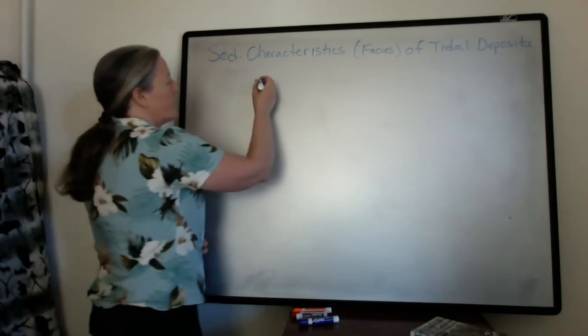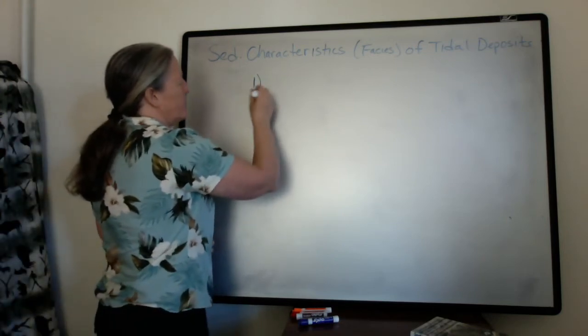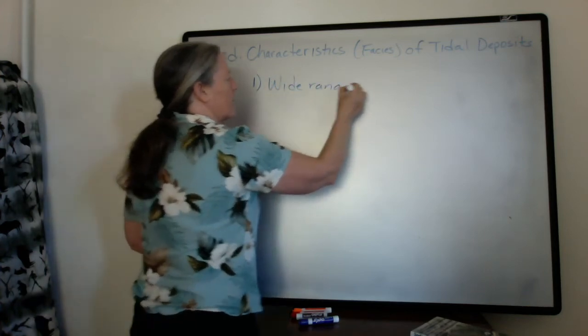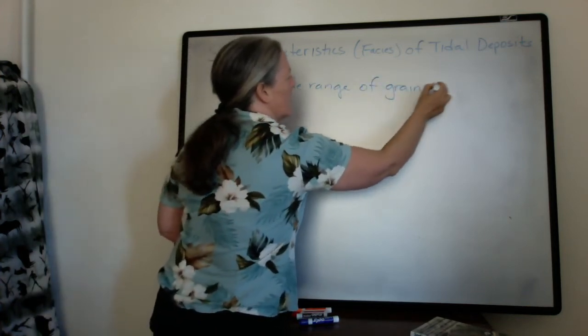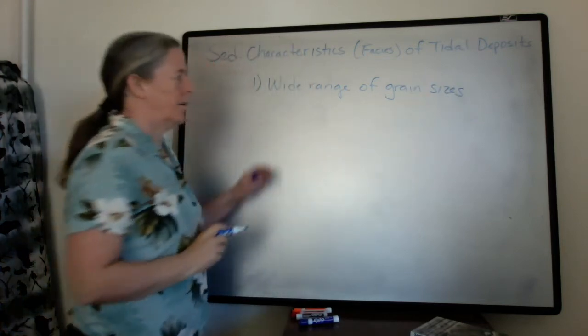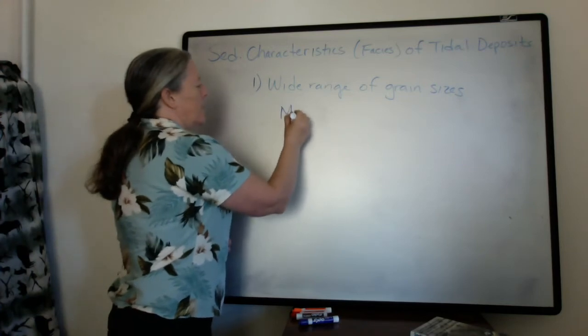Alright, so the flow speed changes produce a wide range of grain sizes. In particular, it contains mud.